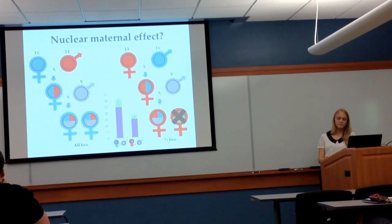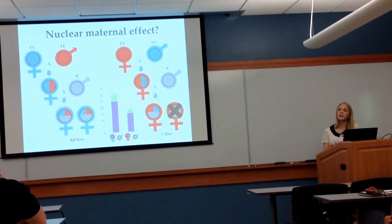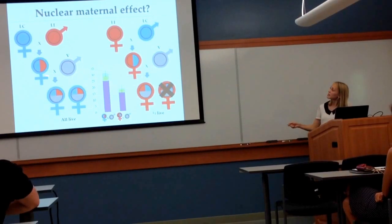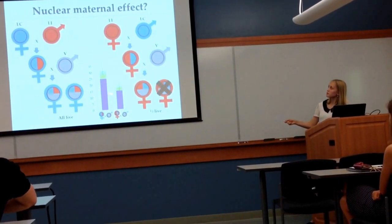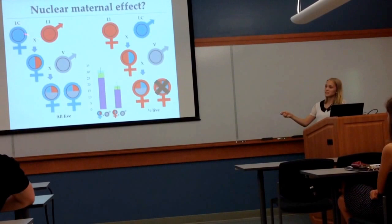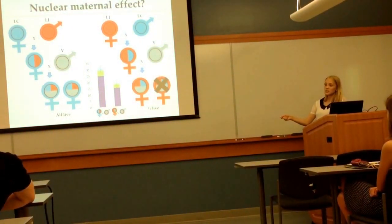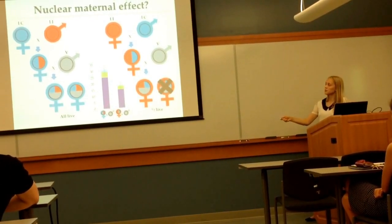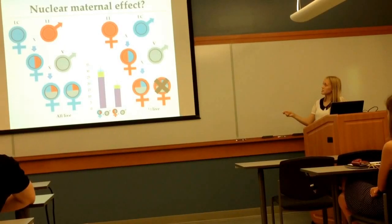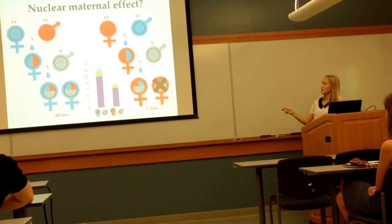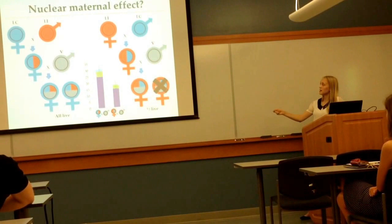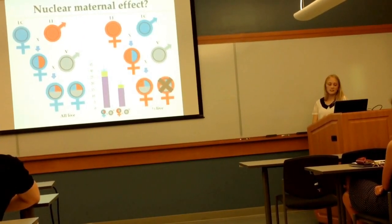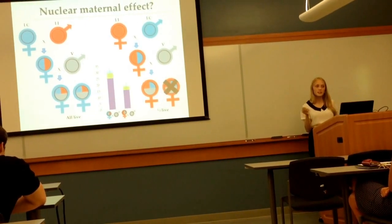We think this could be due to maternal imprinting — a phenomenon in which gene expression depends on the parent of origin. Since these daughters' grandmother is LC, they can either get the expressed gene from LC, which will not cause hypermortality, or the unexpressed gene from LI, so all those hybrid daughters live. But since these other daughters' grandmother is LI, they could either get the expressed gene from LI, which will cause hypermortality, or the unexpressed gene from LC, which will not cause hypermortality. That could explain the asymmetric pattern we're seeing.